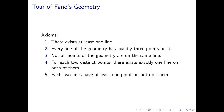The axioms for Fano's geometry are: number one, there exists at least one line; number two, every line of the geometry has exactly three points on it; number three, not all points in the geometry are on the same line; number four, for each two distinct points, there exists exactly one line on both of them; and number five, each two lines have at least one point on both of them.